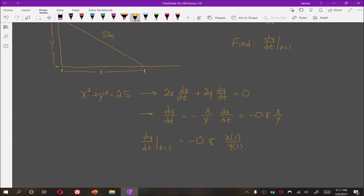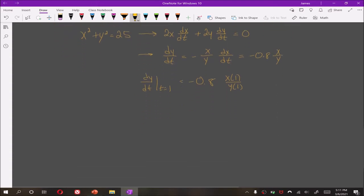We don't know either x(1) or y(1) but we can find it. x(1) would be the initial plus velocity times the number of seconds that have passed. We said initially it's 1.5 meters. So after 1 second we find that the ladder is now 2.3 meters away from the base of the wall.